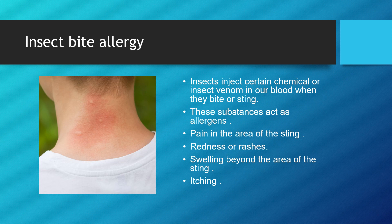Some people are allergic to insect bites. Insects inject certain chemicals or venom into your blood when they bite or sting. These act as allergens, causing pain in the area of the sting, redness or rashes, and swelling beyond the area of the sting. There is always a condition of itching. Insect bite is also a type of allergy.